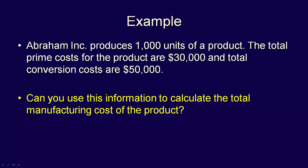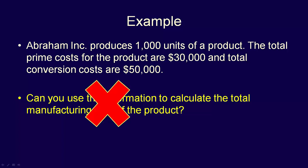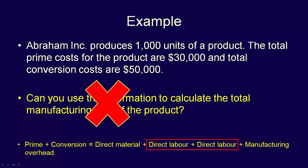Can you use this information to calculate the total manufacturing cost of this product? And the answer is no. If we did that, we would be duplicating the direct labour portion of the costs. Prime costs plus conversion costs are equal to direct materials plus direct labour plus direct labour plus manufacturing overhead. So prime costs and conversion costs should never be added together.